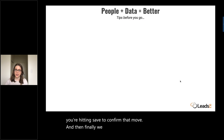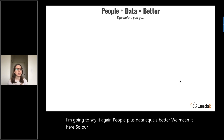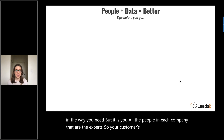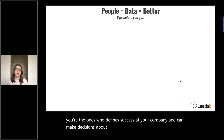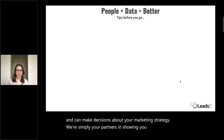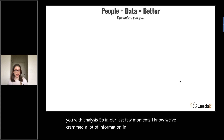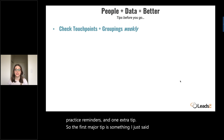And finally, we are here. Our mantra: people plus data equals better. Our system gathers data that can be utilized and optimized in the way you need, but it is you — the people in each company — who are the experts. You know your customers best, you can come up with ideas that will make them happy, and you're the ones who define success at your company and make decisions about your marketing strategy. We're simply your partners in showing you the data and assisting with analysis. So here are a few best practice reminders: the first major tip is to check your touchpoints and groupings weekly, making sure they're grouped the way you want so you can analyze everything more effectively.